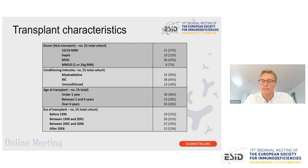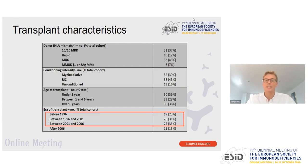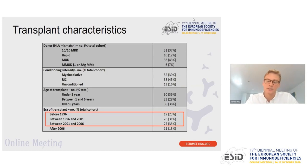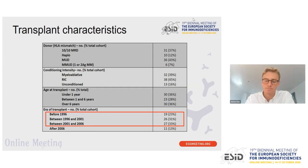In terms of conditioning intensity, 39% had myeloablative conditioning, 45% had reduced intensity conditioning, and 16% had unconditioned transplants. 36% had their transplants below age 1, 28% between 1 and 6, and 36% over age 6. The vast majority of transplants took place before 2006, which is why we have such long-term outcome data. However, transplant practices have changed significantly since 2006 in terms of conditioning, donor type, etc., and this is worth bearing in mind when analyzing the data.